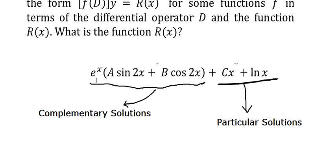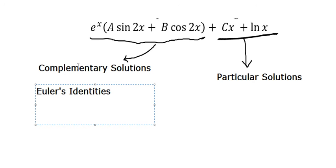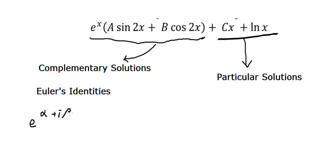Now I will go to the complementary solution. We use this formula from Euler's identity, so that means we have E to the power of alpha plus i·beta, which equals E^alpha · cosine(beta) plus E^alpha · i · sine(beta).